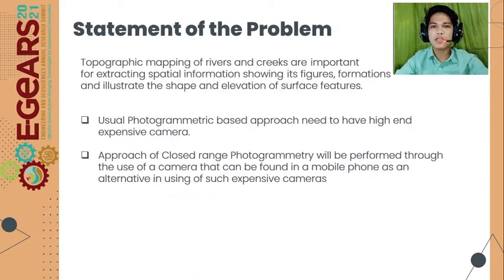For the statement of the problem: topographic mapping of rivers and creeks is important for extracting spatial information, and the usual photogrammetric-based approach requires a high-cost or metric camera. Through the use of close-range photogrammetry, the camera found in a mobile phone will be used as an alternative to such expensive cameras.